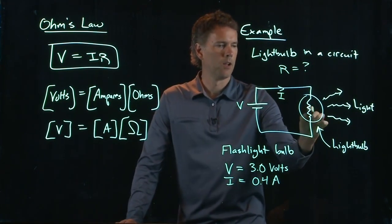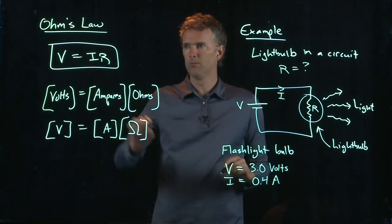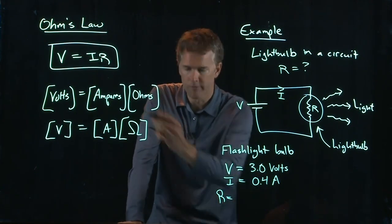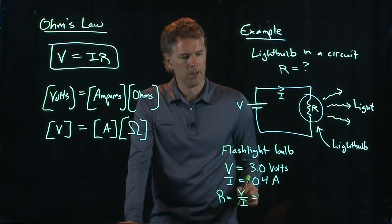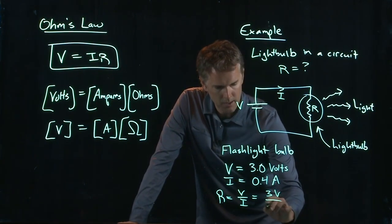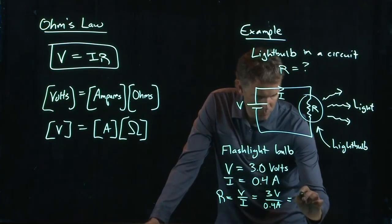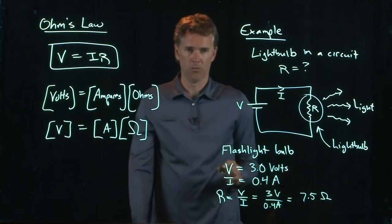Current I, resistance R. All right, Ohm told us how to do that. Piece of cake, right? R is just V over I. And we know V is 3 volts. I is 0.4 amps.